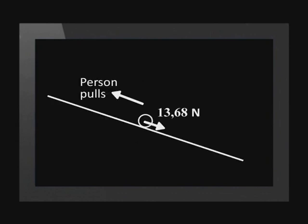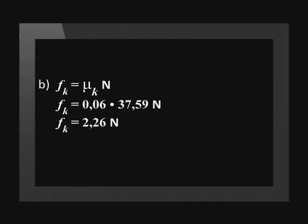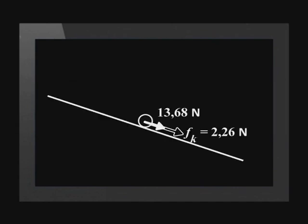Let's simplify our diagram like this. While a person pulls the sled up the slope, friction acts in the opposite direction to the person's pull. So friction acts down the slope. We've already calculated that for this situation, the magnitude of kinetic friction is 2.26 newtons.